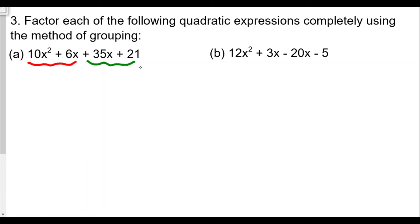Now we're going to find the greatest common factor for each pair. For the first pair, it looks like we are factoring out maybe 2x, because 2x divides evenly into both 10x² and 6x, and we're left over with (5x + 3).